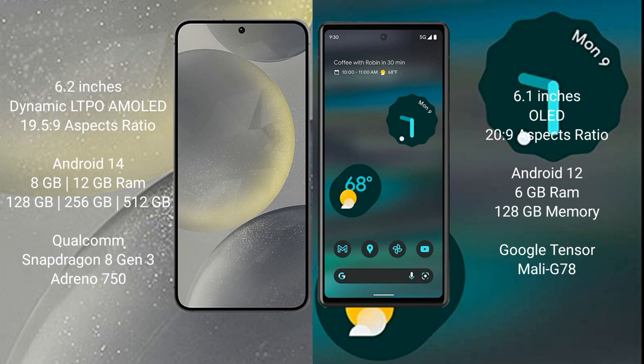The Samsung Galaxy S24 runs on Android 14, while the Google Pixel 6a runs on Android 12. The Samsung Galaxy S24 comes with 8GB or 12GB RAM and 128GB, 256GB, or 512GB internal storage with a Qualcomm Snapdragon processor. The Google Pixel 6a comes with 6GB RAM and 128GB internal storage, powered by the Google Tensor processor and Mali-G78 GPU.